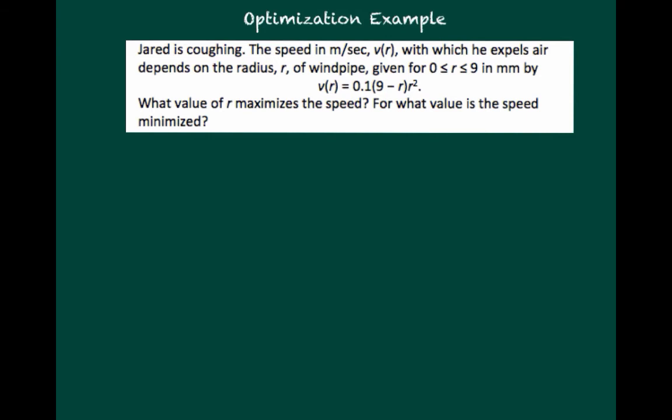In this example, we see that Jared is coughing. The speed in meters per second, and it will be covered by the function V(r), with which he expels air depends on the radius of the windpipe. And that is given over the interval from 0 to 9 millimeters. And the function is 0.1(9 - r)r². They want to know what value of r maximizes the speed, and for what value is the speed minimized. Well, we're going to approach this the way we have every problem up till now. We're going to find the critical points.